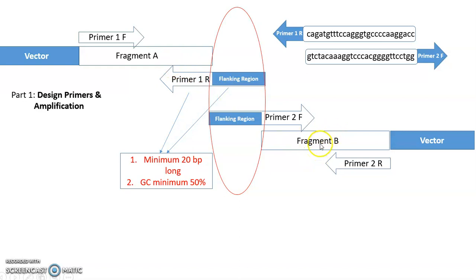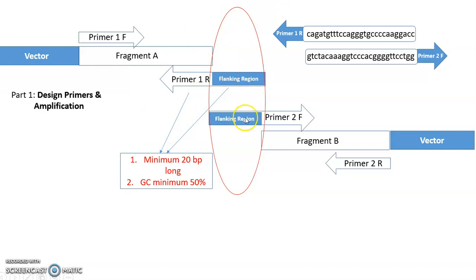This is Fragment A and this is Fragment B. For Fragment B, you also have to amplify this part by designing two different primers. Primer 2R has no difference from Primer 1F — these are the same design. But the forward primer is a little different. Primer 2R will bind to its template, but the rest of the part has no binding region, making a flanking region. When you join Fragment A and Fragment B, these two parts will be complementary with each other.